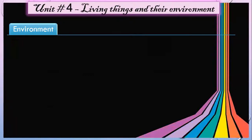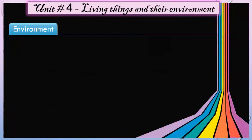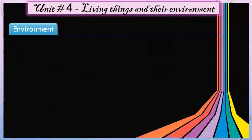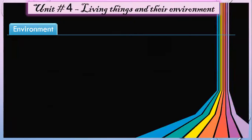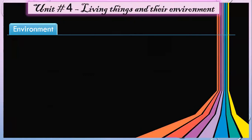The non-living part of the earth is made up of rocks, soil, water, air, and sunlight. The living part is made up of plants, animals, and human beings as well.